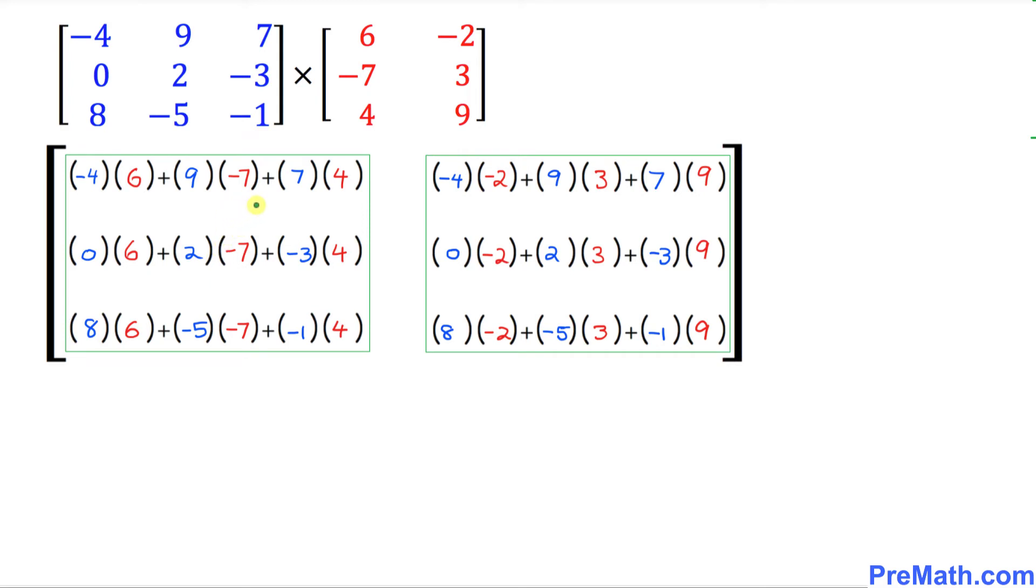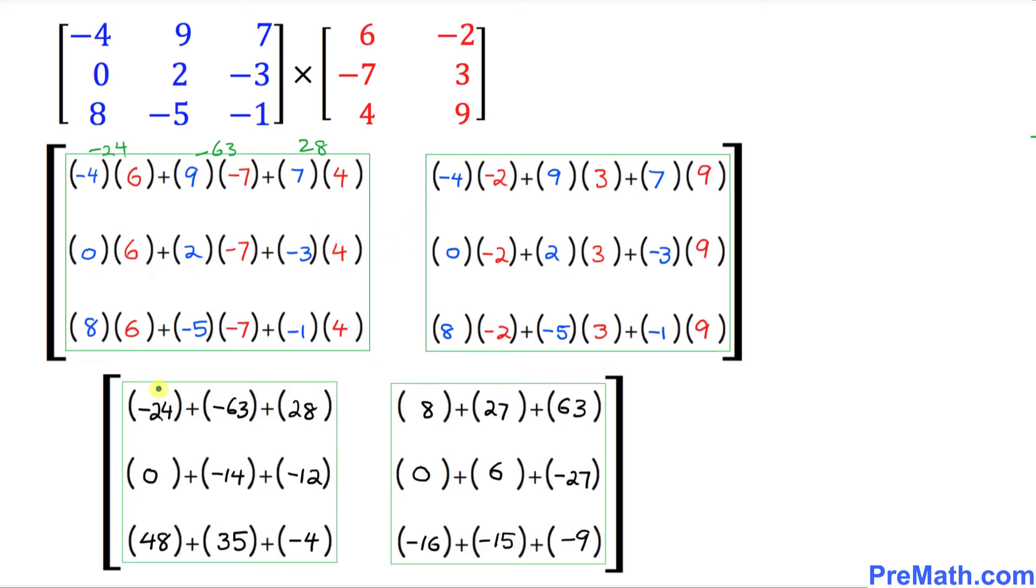Now, the next thing that we're going to do is we are going to multiply these numbers in these parentheses. Negative 4 times 6 is going to become 24. 9 times negative 7 is going to be negative 63. 7 times 4 is 28. All the way, we're going to do the same thing.